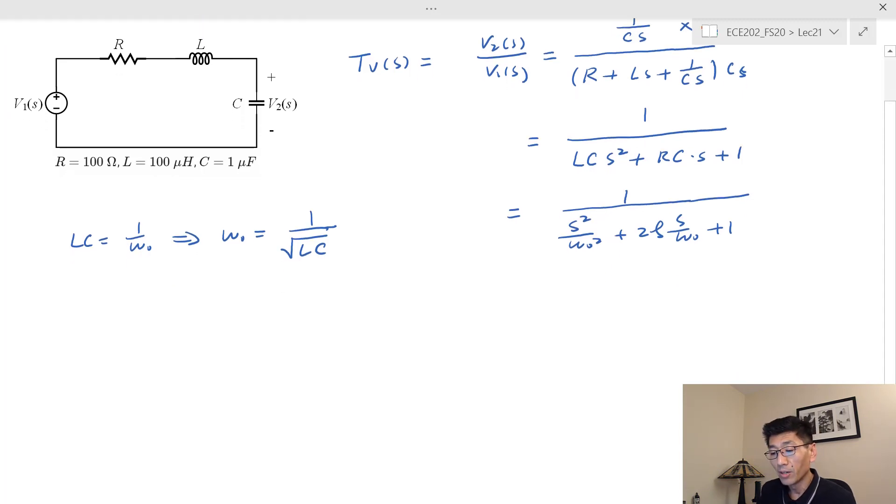This is true for series connected RLC and also true for parallel connected. This is the resonant frequency, the natural resonant frequency. For the zeta term we need to compare: we have RC that should be equal to 2ζ over ω₀. Therefore ζ is equal to half RC times ω₀.